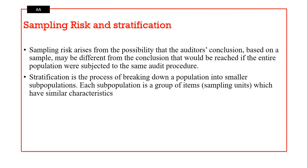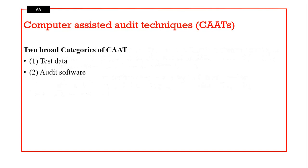Sampling risk is a reality. It arises from the possibility that the auditor's conclusion based on a sample may be different from the conclusion that would be reached if the entire population were examined. To minimize sampling risk, you need to increase the size of your sample. Stratification is the process of breaking down a population into smaller subpopulations so you can examine them individually, allowing more accuracy in interpreting your sample.